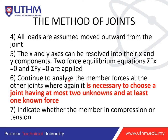Continue to analyze member forces at other joints where it is necessary to choose a joint having at most two unknowns and at least one known force. Indicate whether the members are in compression or tension. For example, at one joint you have three forces — if you already know one, you may have at most two unknowns.